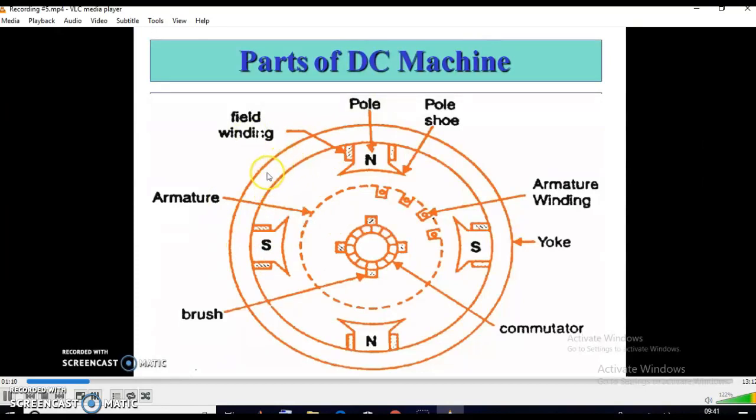This is the yoke. In small machines, cast iron yokes are used because of cheapness, but in case of large machines, fabricated steel is used due to its high permeability.